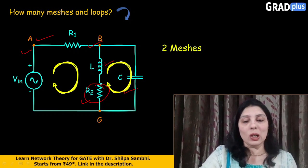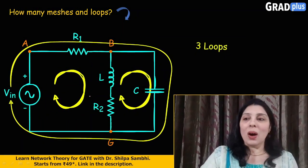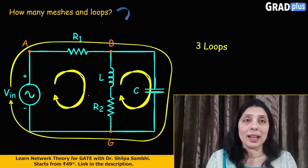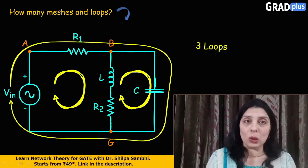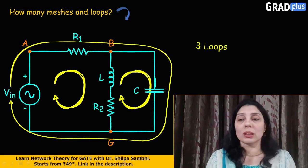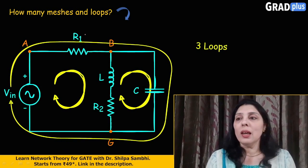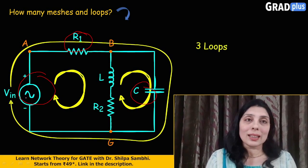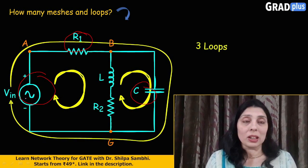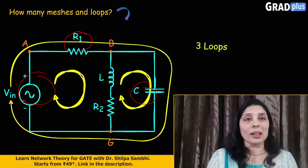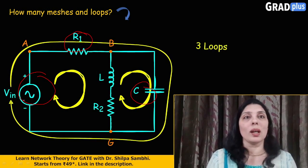Now, what is a loop? The two meshes we have identified are also known as loops. And this big outside loop which you can see, consisting of resistor R1, the capacitor C, and the voltage source VIN — this is loop number 3, because as per the definition, a loop may contain a loop or a mesh inside it. So ultimately there are three loops in this particular circuit.